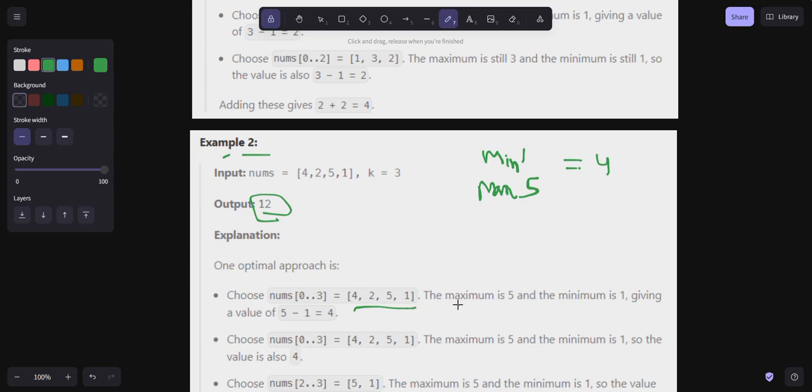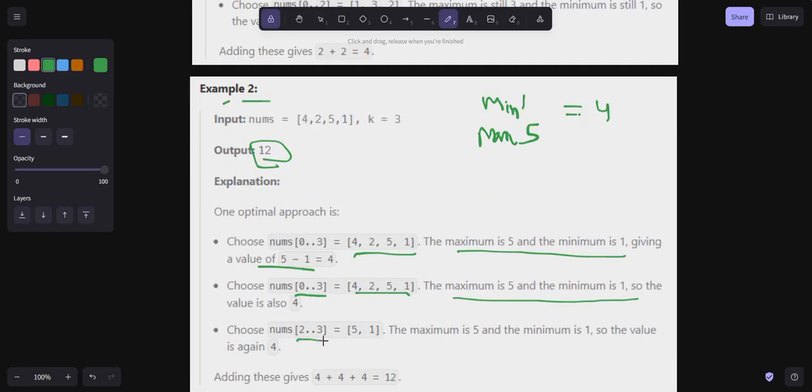Here see, the maximum is five and the minimum is one, giving a value of 5-1=4. Here also we are choosing the same, [0:3]. We can choose [4,2,5,1], the maximum is five and the minimum is one. So I have to just make sure that whatever subarrays I'm going to choose, I have min=1 and max=5. Min and max value should be there.